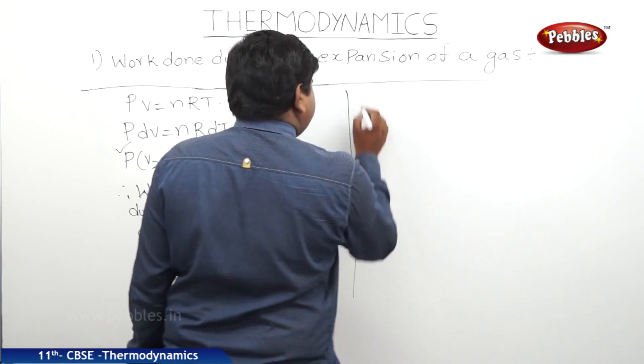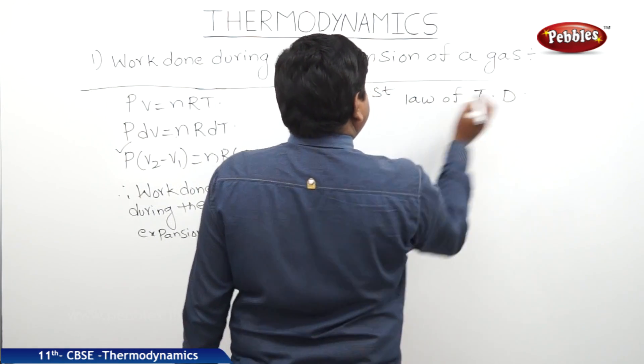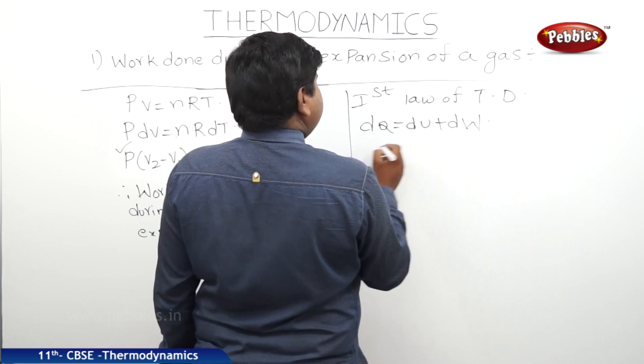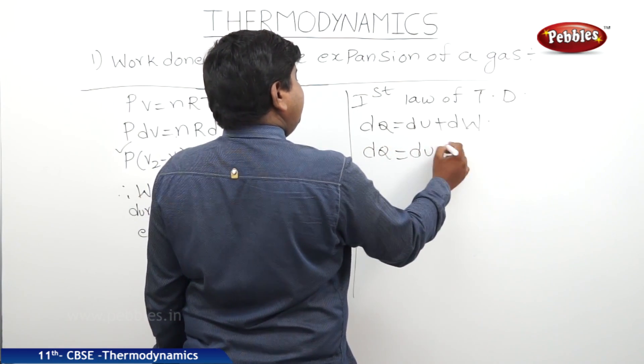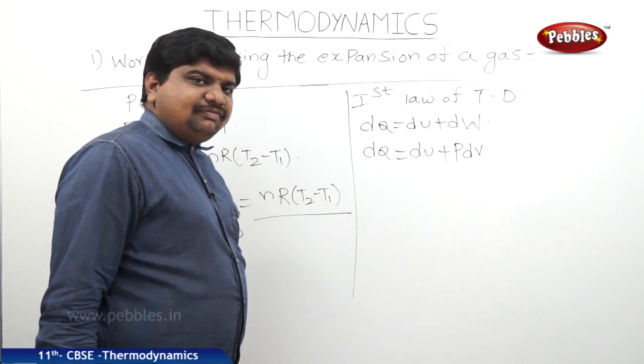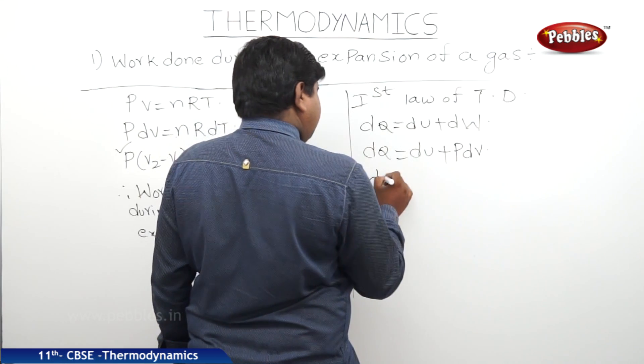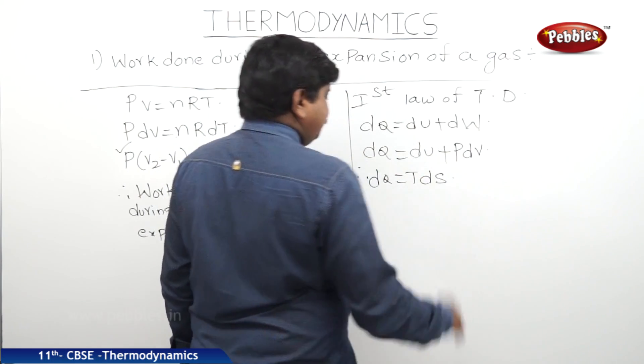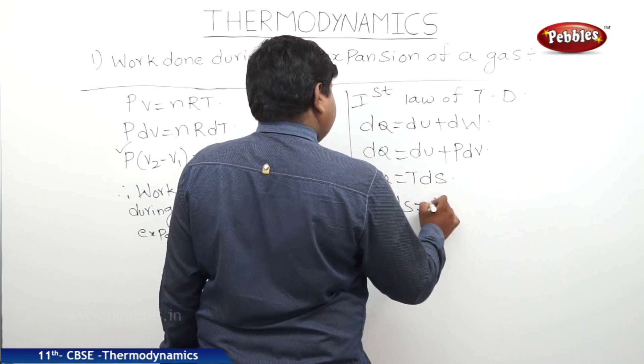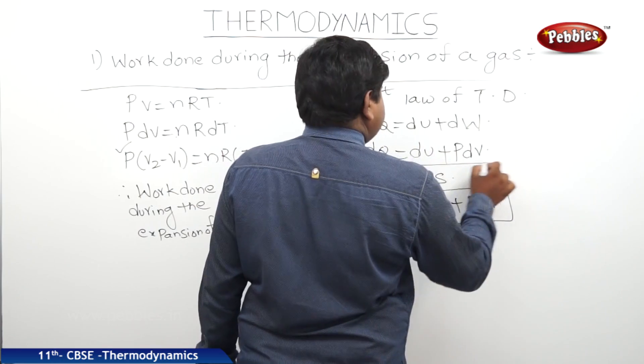If we see the first law of thermodynamics, we can say dQ equals dU plus dW. Therefore, dQ equals dU plus P dV. This is one form of the first law of thermodynamics. With the help of specific heat capacity formula, we can write dQ equals T dS because dS equals dQ by dT. Therefore, T dS equals dU plus P dV. This is also one form of the first law of thermodynamics.